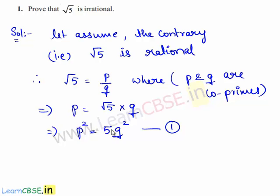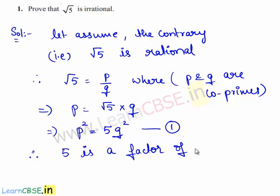Since 5 divides p squared, 5 also divides p. Therefore, 5 is a factor of p. Since 5 is a factor of p, p can be expressed as 5 times c, where c is some constant.